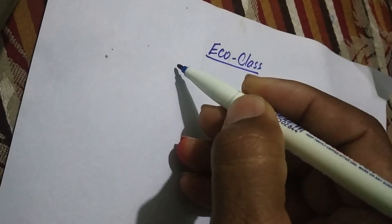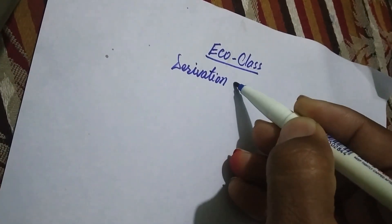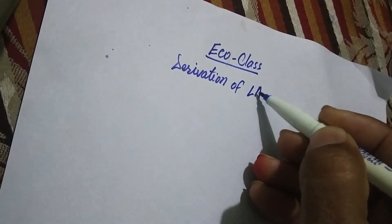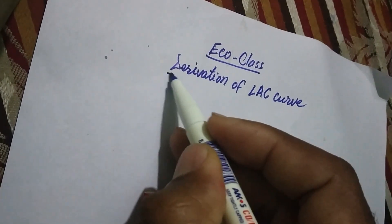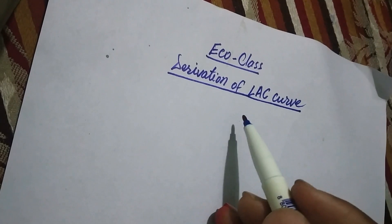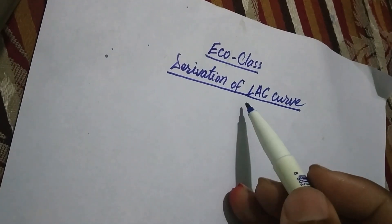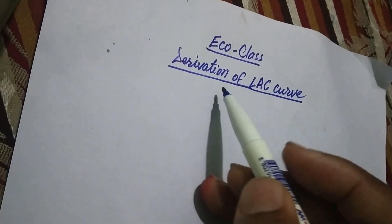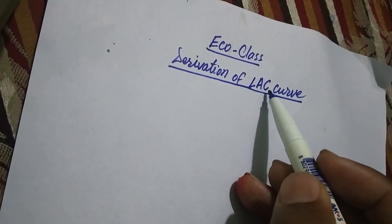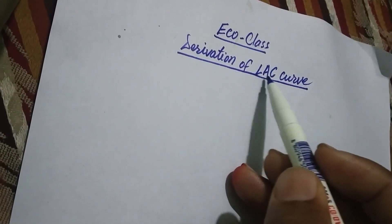Hi students, welcome to my economics class. Today I am going to discuss the derivation of the long-run average cost curve. Long-run average cost is the per unit production cost in the long run. It represents the production cost at various levels of output in the long run. This long-run average cost curve can be derived with the help of short-run average cost curves.